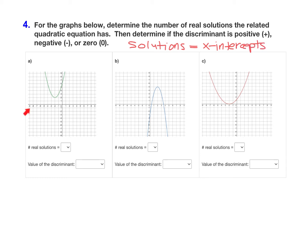Well, notice that my first graph here doesn't cross the x-axis. There are no x-intercepts. So if there are no x-intercepts, that means there are no real solutions. So pick zero from that drop-down.